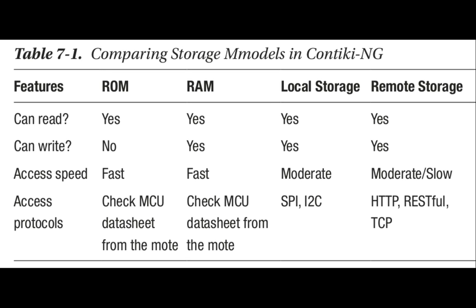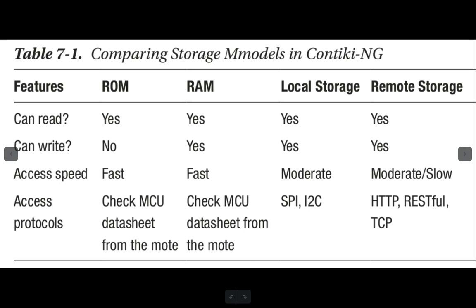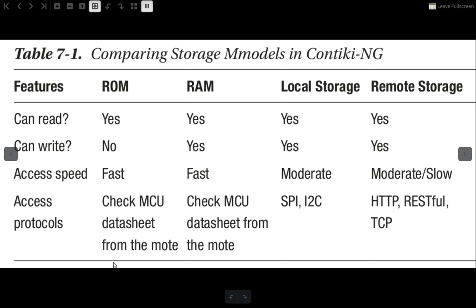Comparing storage models in Contiki OS, we have four options: ROM, RAM, local, and remote. We can read from all four. For writing, we cannot write to read-only memory, but we can write to RAM, local storage, and remote storage. For access speed, internal storage is very fast compared to external storage. Local and remote storage are moderate, and remote storage can sometimes be slow.